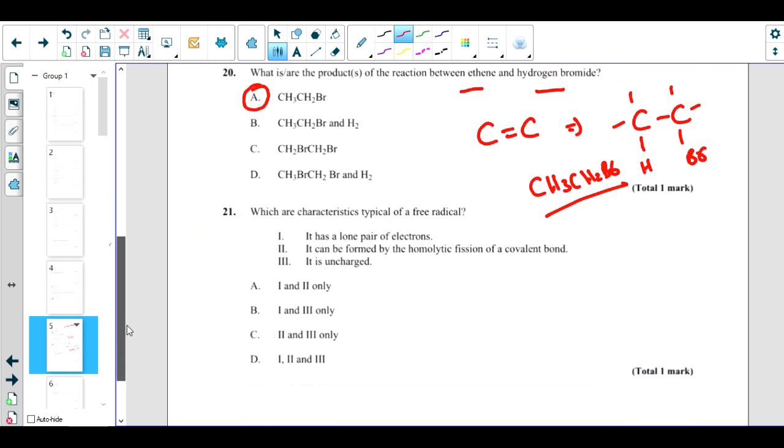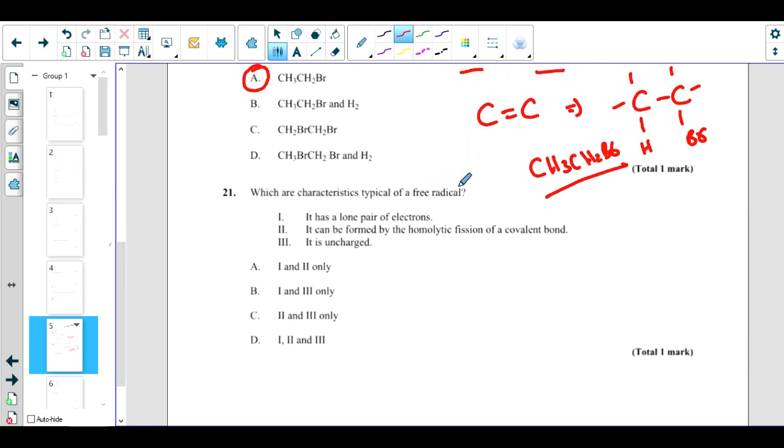What are the characteristics of a free radical? Do they have a lone pair of electrons? No, they don't have lone pair. They have their own electrons which they get after separation from homolytic fission. Can they be formed by homolytic fission of covalent bond? Yes, it is true because what is homolytic fission? They have a covalent bond, Cl2, they break the covalent bond so they just take their electrons with them. This is homolytic fission. Is it uncharged? Yes, it's uncharged - their protons and electrons are same. So it's also true. What's the correct answer? We have C, 2 and 3. This is the correct answer.